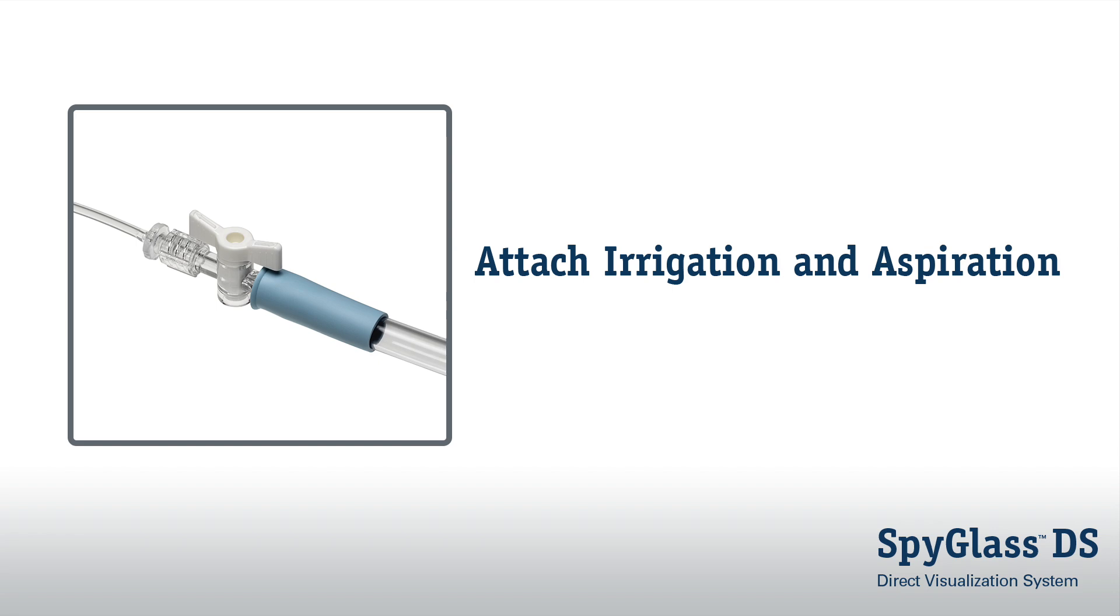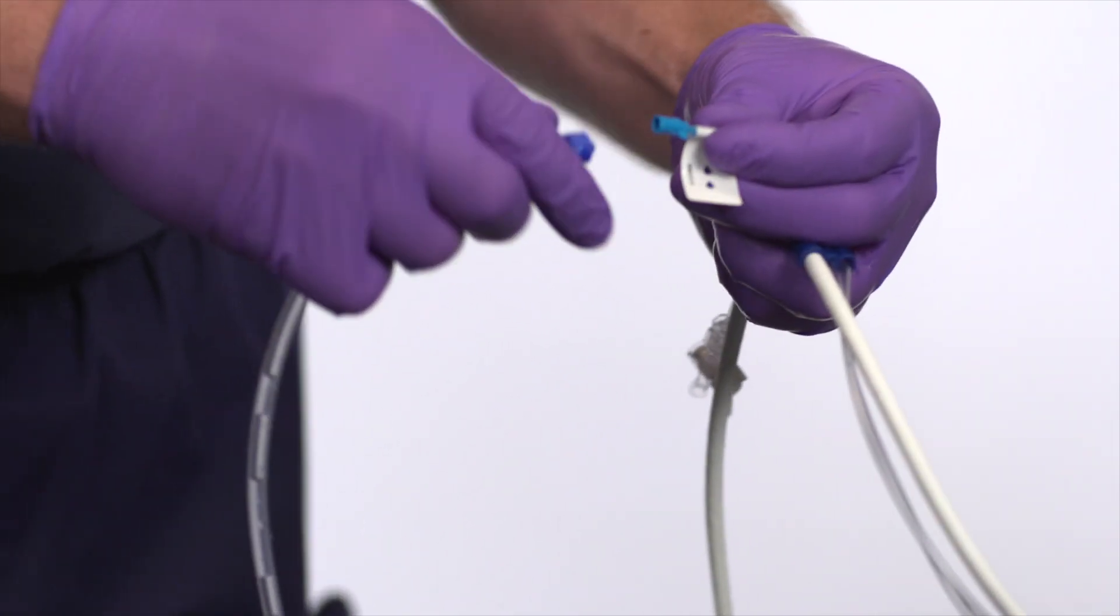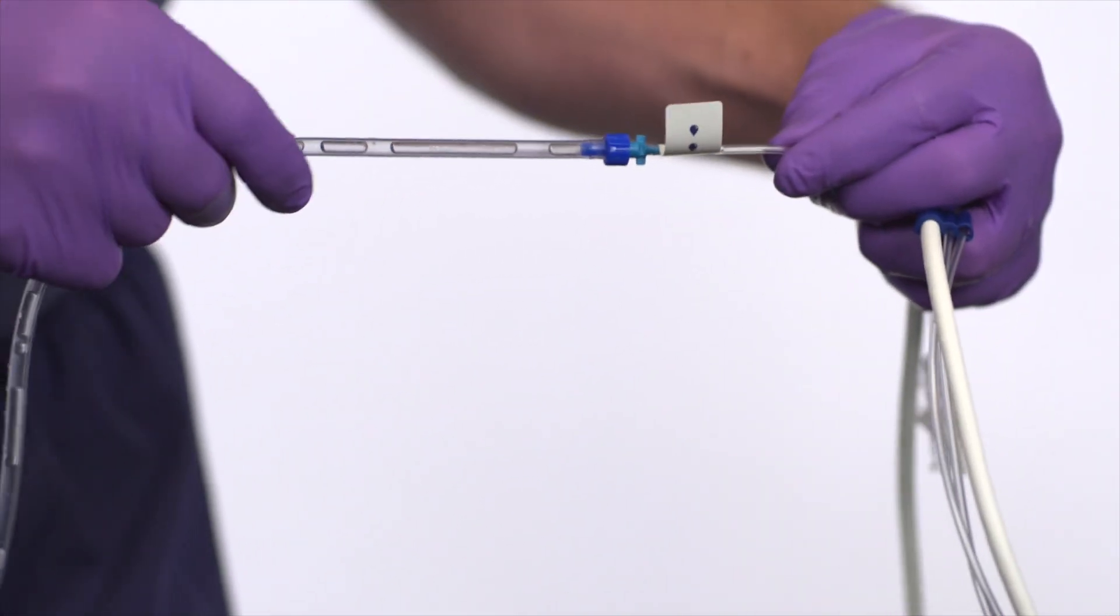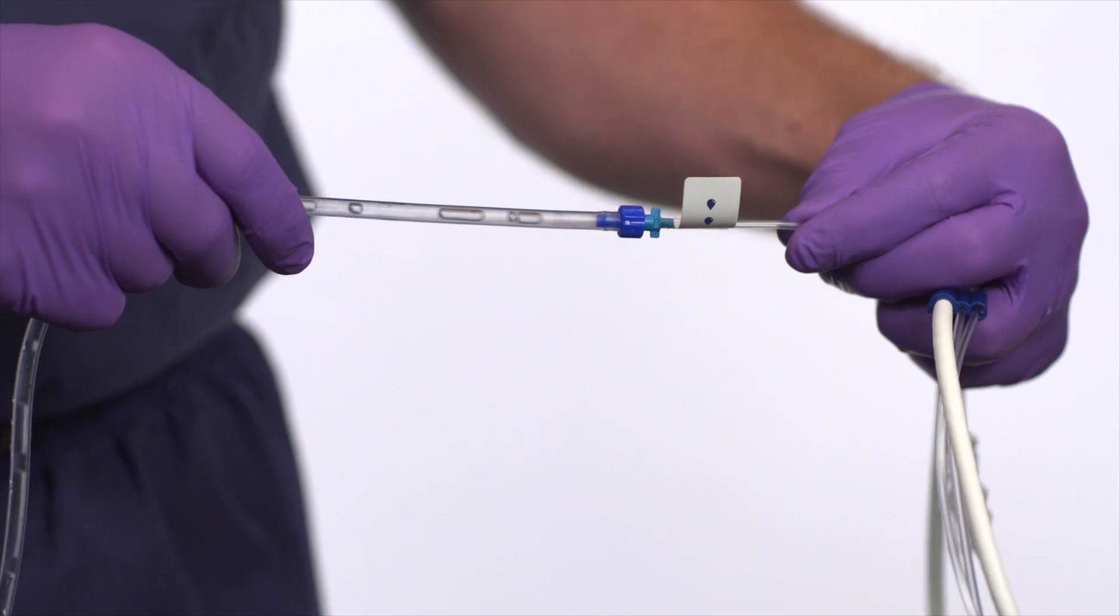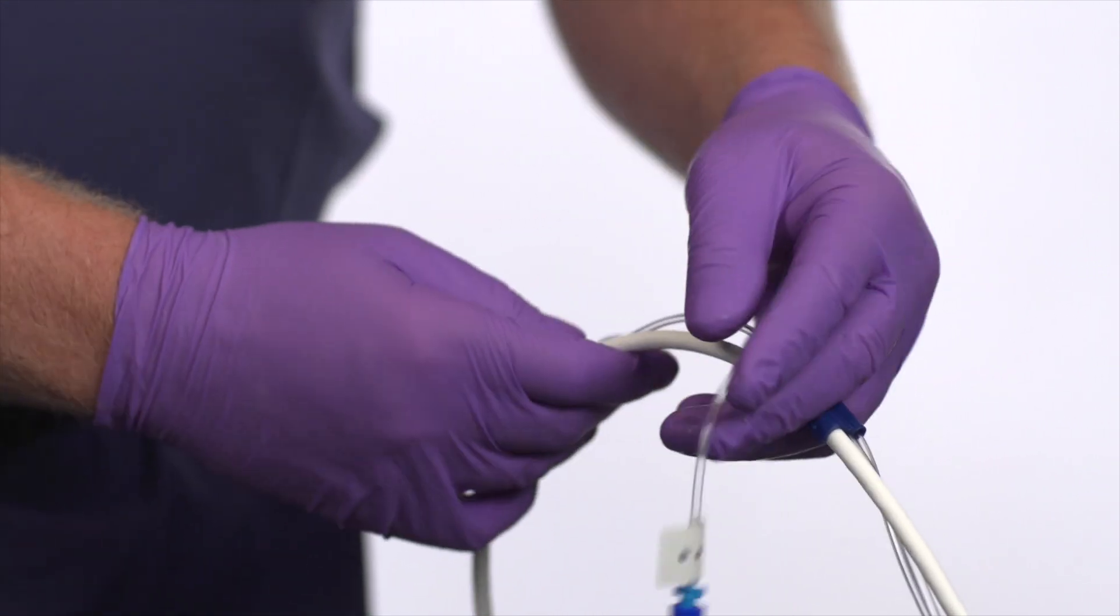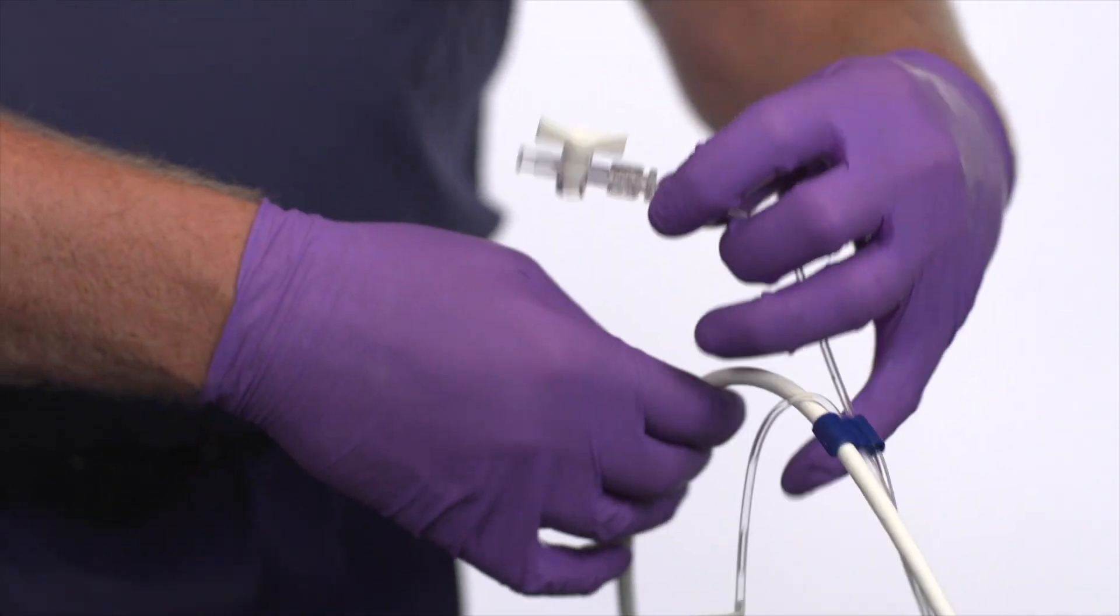Attach irrigation and aspiration. Connect the irrigation tubing to both the irrigation pump and the irrigation port. Apply irrigation to flush the irrigation channels with saline or sterile. This will minimize air bubbles when later irrigating in the target duct.